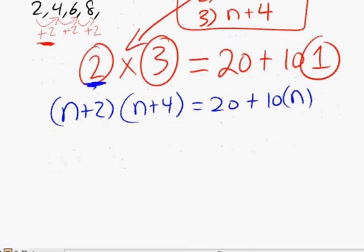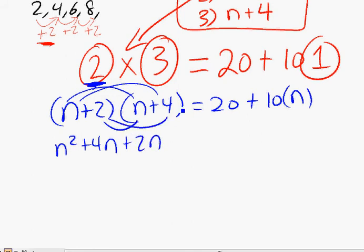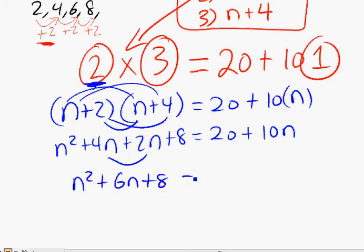All right, let's simplify this. This should be distributive property: n times n is n squared, n times 4 is 4n, and 2 times n is 2n, and 2 times 4 is 8. That's equivalent to 20 plus 10n. Now, let's combine these like terms, n squared plus 6n plus 8.